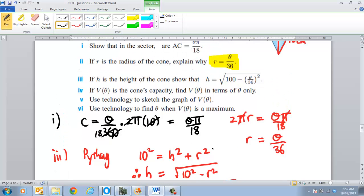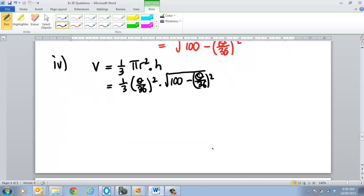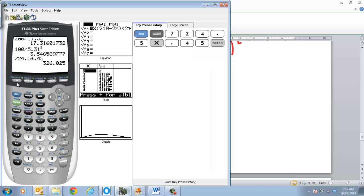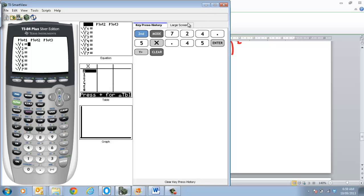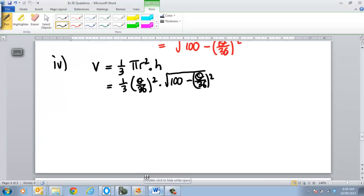And then the next part says, use technology to sketch this function. Next year, you'll get to probably differentiate this, but this year, all we have to do is graph it. So going to our graphy bit. What we're going to do there is put in our formula, so remembering our formula was a third times by θ on 36 squared, and then times by the square root of that.